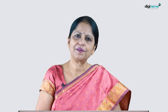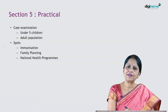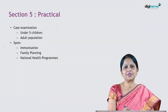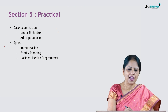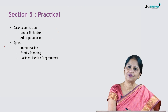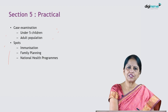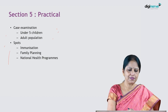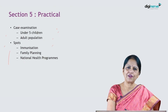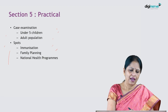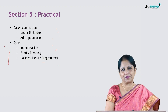Section 5 is the practical part. The first part is case examination, which includes examination of under-5 children and examination of adult population. The second part is spot specimens, covering specimens on immunization, family planning, and those related to national health programs.